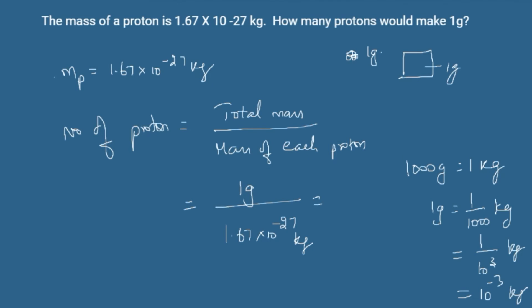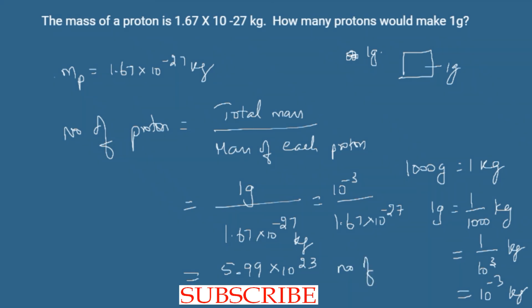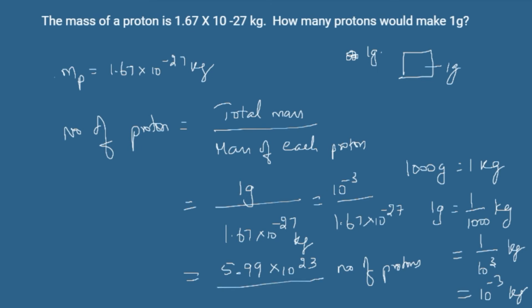So, substituting in this equation: 10 power minus 3 divided by 1.67 into 10 power minus 27. On dividing this, I am going to get a value of 5.99 into 10 power 23 number of protons. Imagine that these many protons combine to form 1 gram of the given substance.